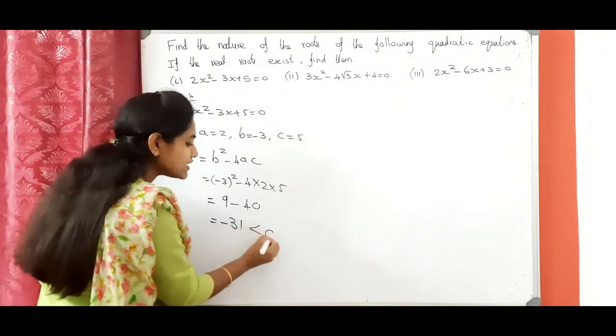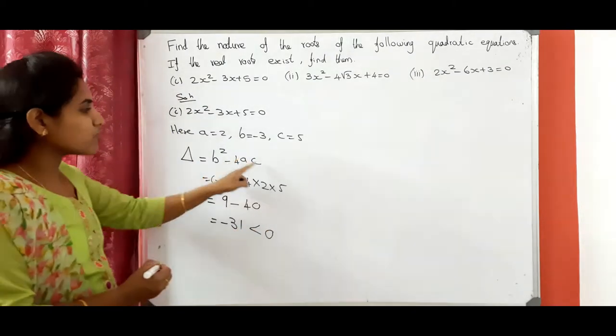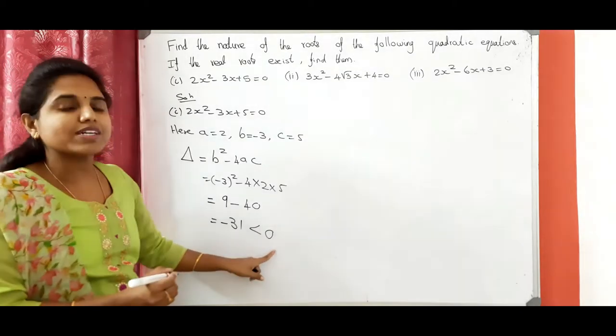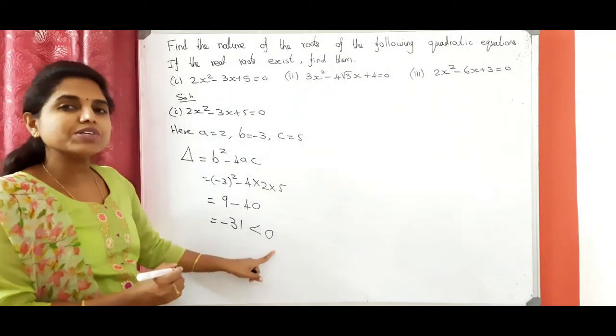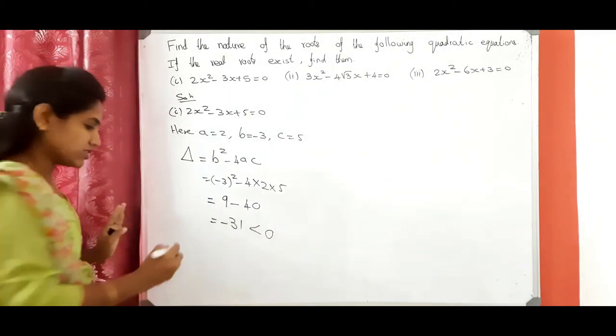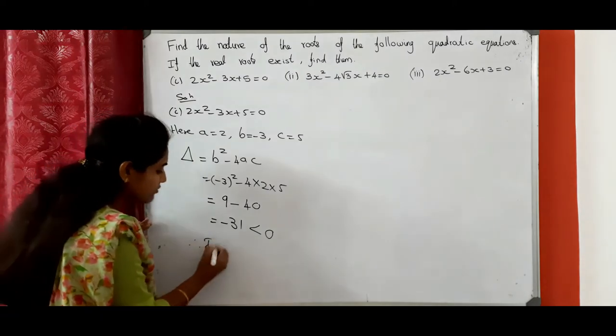We got a negative value. Negative value means less than 0. So b squared minus 4ac is less than 0, which means the nature of the roots is no real roots. Therefore, it has no real roots.